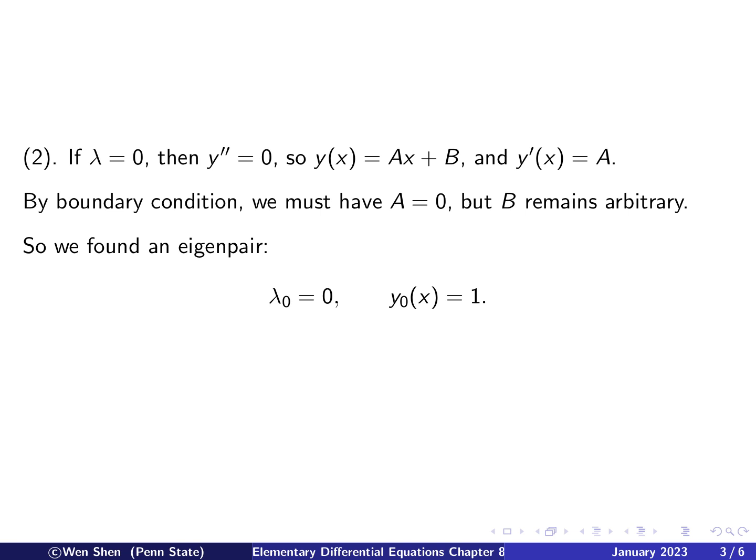And then we put in the boundary condition, y prime at 0 shall be 0, then a is 0, and y prime at L is 0, so a is 0. So if a is 0, this would satisfy the two boundary conditions. And then we see that b now remains arbitrary. There's nothing, no restriction on the b. So we can simply set it to be 1, because any scalar multiple of the function is another function.